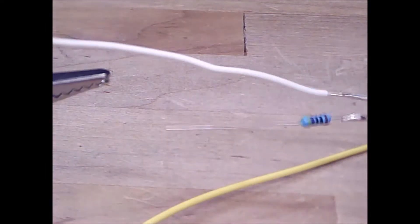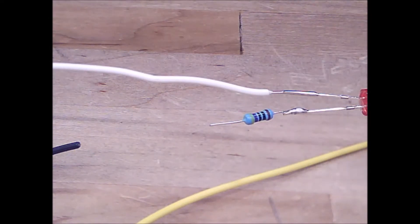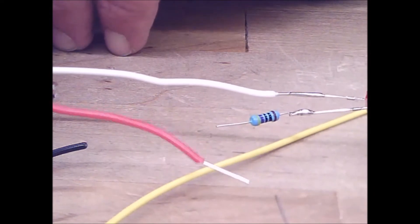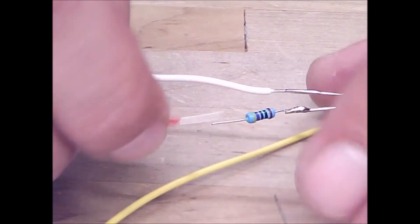So I'm going to unhook it from the clip and go ahead and trim some of this lead off. While I've got everything set up, I might as well solder our positive wire on. Since we're using a red LED, I figured we'd go ahead and use a red wire to help us know in our wiring which LED this goes to.